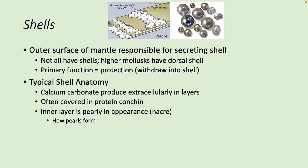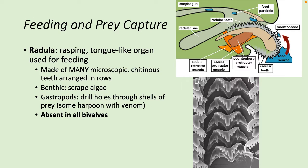Feeding and capturing prey is mostly done by the radula — a tongue-like organ made up of many microscopic chitinous teeth arranged in rows. It's very raspy and abrasive. If the organism is benthic, living on the bottom of a surface, they will scrape algae off. Gastropods tend to drill holes through shells of their prey, and some are equipped with a harpoon and venom. However, the radula is not found in bivalves.